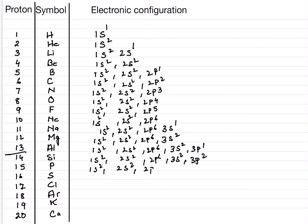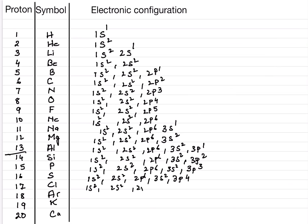Phosphorus is 1S2 2S2 2P6 3S2 3P3. Sulfur is 1S2 2S2 2P6 3S2 3P4. Chlorine is 1S2 2S2 2P6 3S2 3P5.